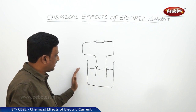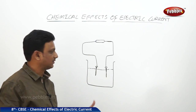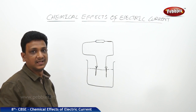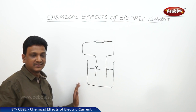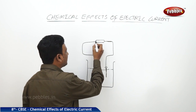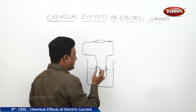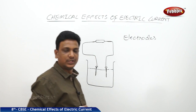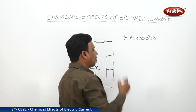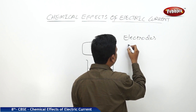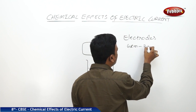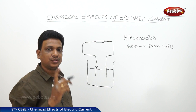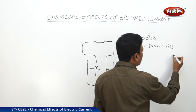Now let us see the chemical effects of electric current — the main heading of this lesson. We have taken a liquid, we are passing electric current through it, and we are going to observe what kind of chemical changes and reactions occur. For this, you need a battery connected to two wires, and these two wires are connected to two electrodes — which can be two iron nails of about five to six centimeters length.